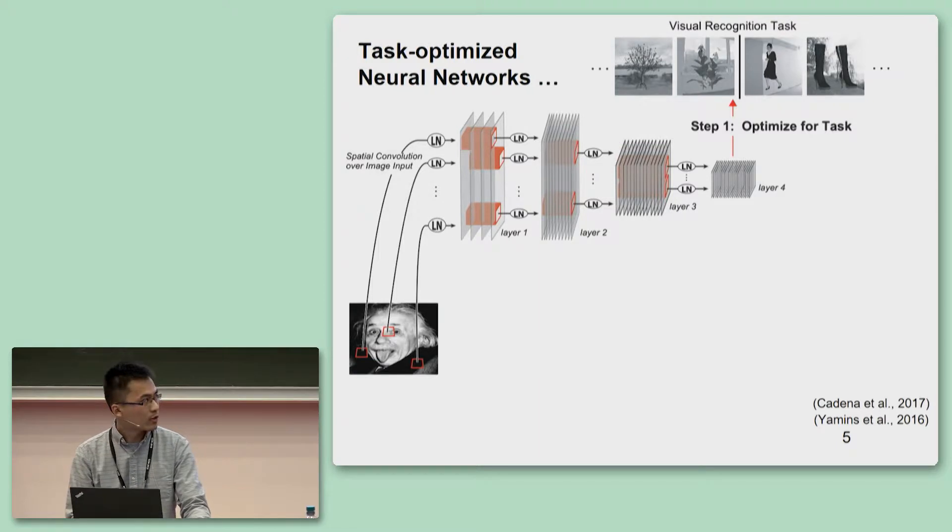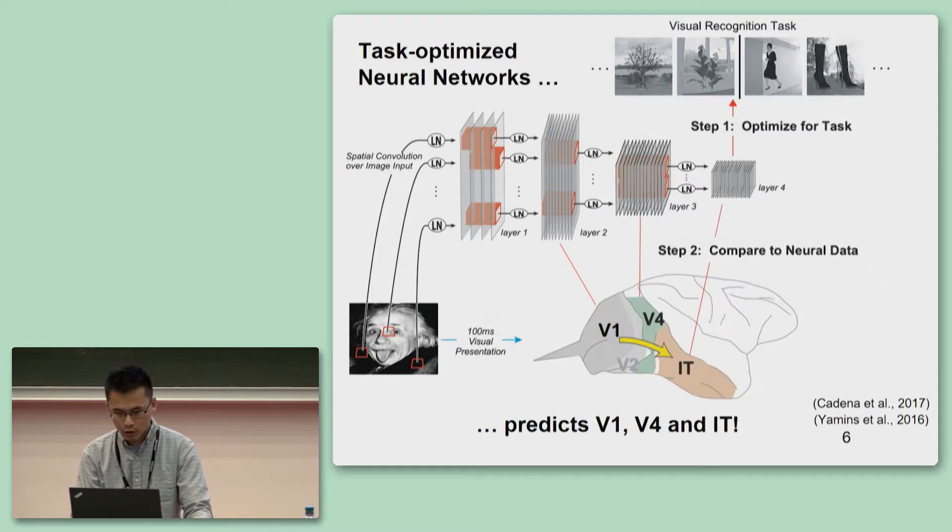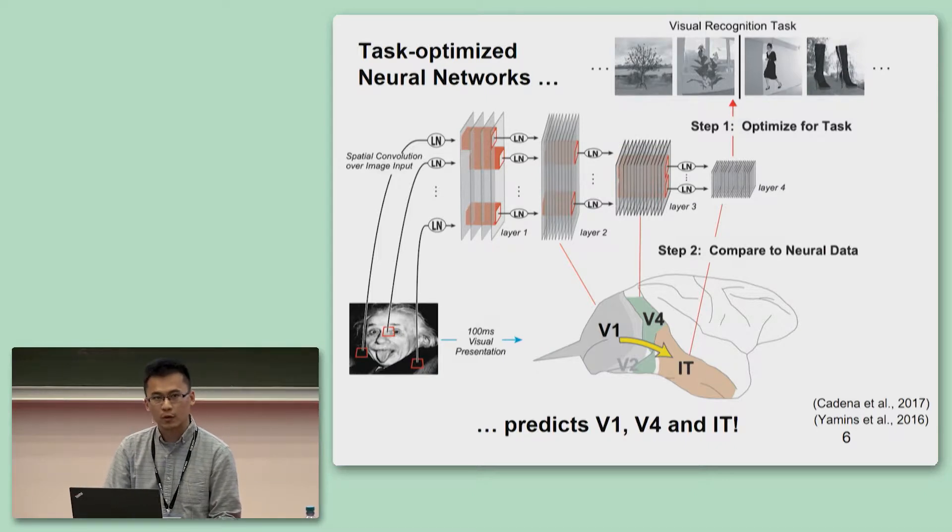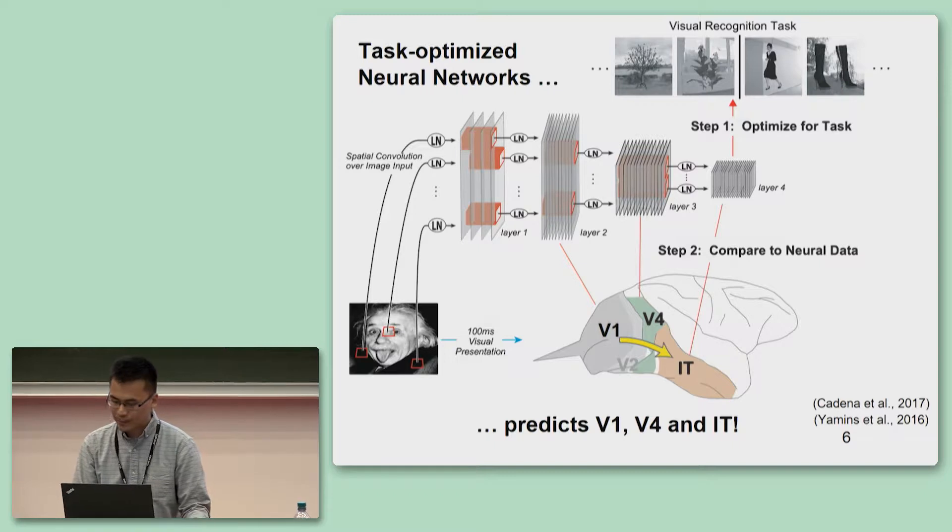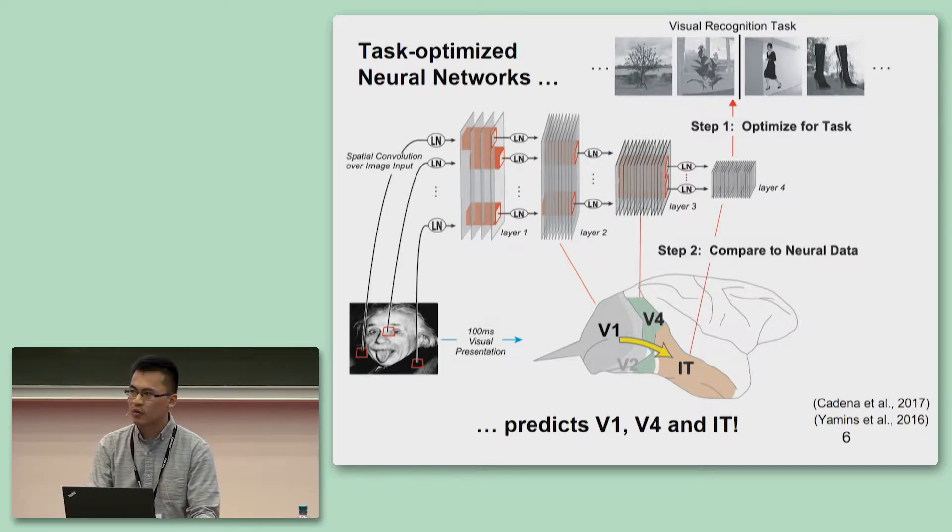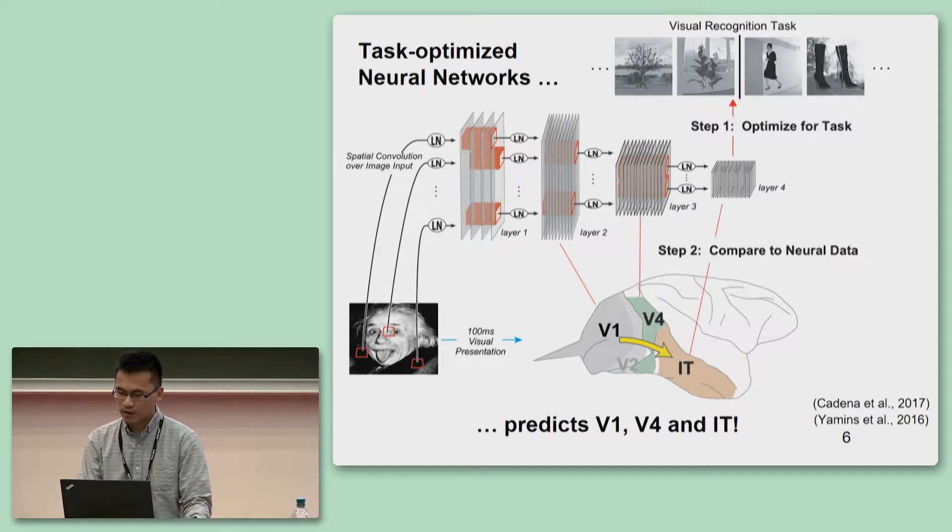Recently, researchers have made much progress in understanding the ventral visual stream using task-optimized deep neural networks. Specifically, they found that the networks trained on visual object recognition can accurately predict neural responses in brain areas including the upstream area V1, intermediate area V4, and the downstream area IT. Their neural predicting performance surpasses all other models even though these neural networks have never seen neural data during their training.